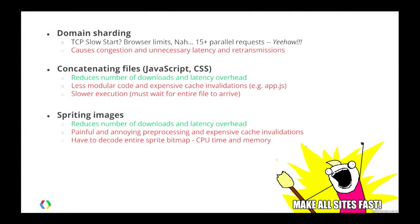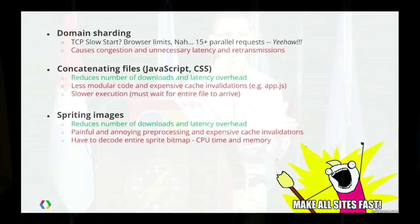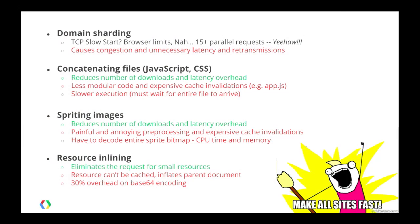Spriting images is a disaster. Talk to any designer and try to explain why you need to do this — it makes no sense. Not only that, it doesn't even make sense in the browser, because in order to show just one part of the sprite we need to decode the entire sprite, which consumes a ton of memory. Resource inlining — for certain types of assets like text-based assets it's okay, but if you're Base64-inlining your images into your HTML doc, there are so many problems: we're inflating the document and we can't cache those resources individually. But all of these things is just something we have to put up with today.